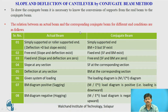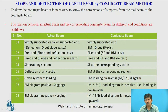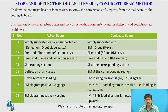To draw the conjugate beam, it is necessary to know the conversion of supports from the real beam to the conjugate beam. A simply supported or roller support in the actual beam is converted to simply supported in the conjugate beam. A free end in the actual beam is converted to a fixed end in the conjugate beam, and a fixed end in the real beam is converted to a free end in the conjugate beam. The slope at any section in the real beam equals the shear force at the corresponding section of the conjugate beam, and deflection at any section in the real beam equals the bending moment at the corresponding section in the conjugate beam.